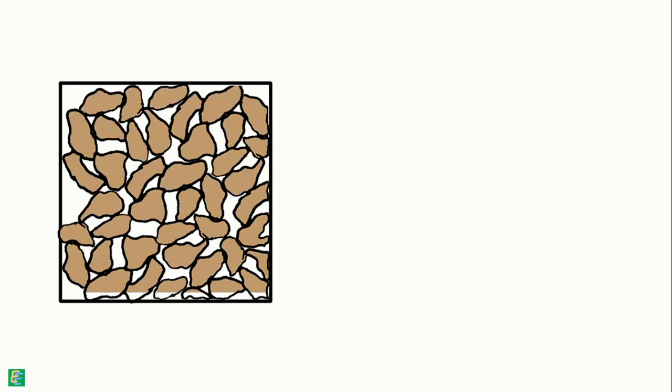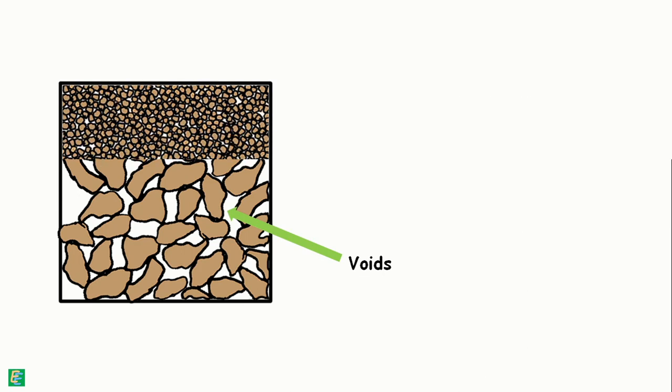In a unit volume, coarse-grained soils, as they have large particle size, have less mass and more voids, while in the same volume, fine-grained soils have more mass and less voids.